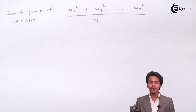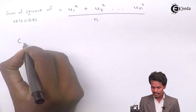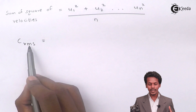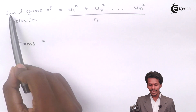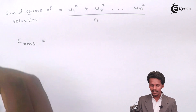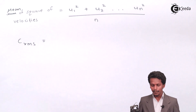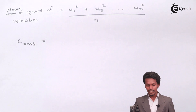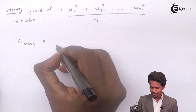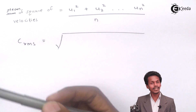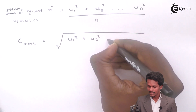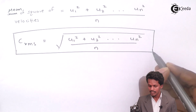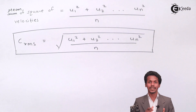Taking the square root of that mean gives us the root mean square velocity, written as C_RMS. So C_RMS = √[(U1² + U2² + ... + Un²) / n]. This is the root mean square velocity of a particular molecule present in a fixed volume of a container.